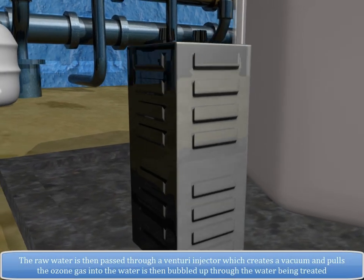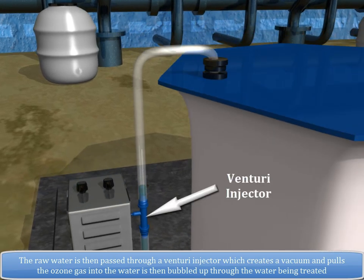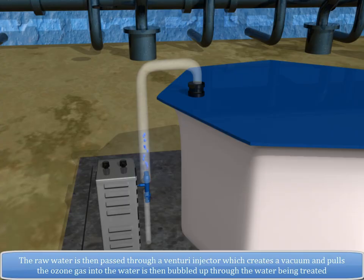The raw water is then passed through a Venturi injector, which creates a vacuum and pulls the ozone gas into the water, and is then bubbled up through the water being treated.